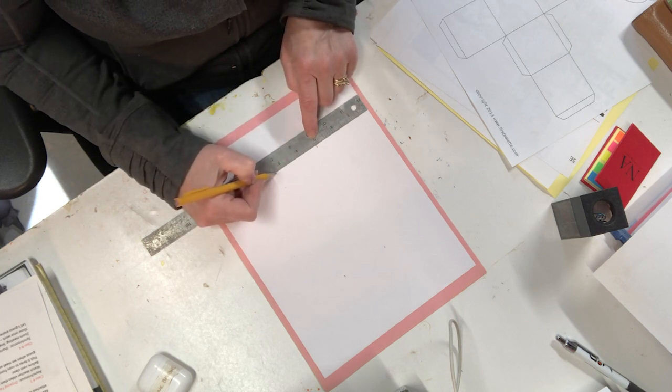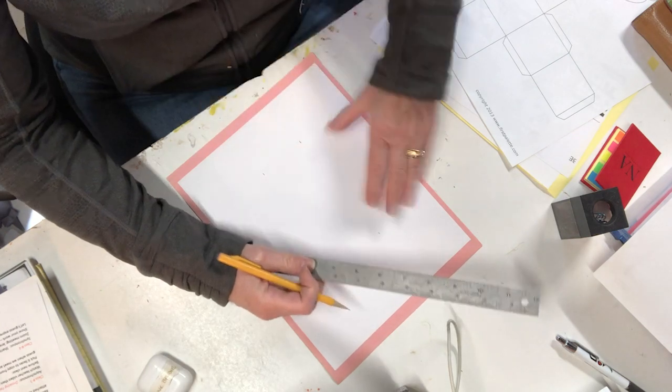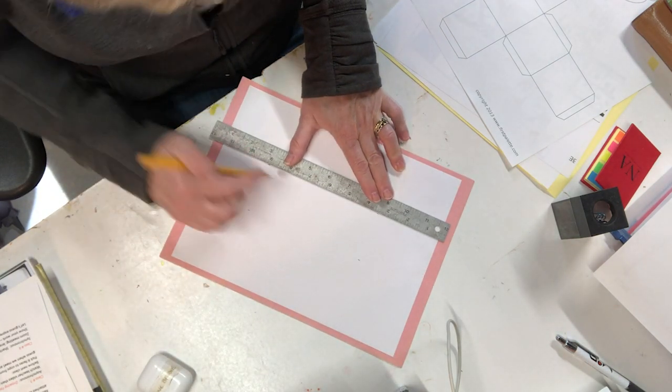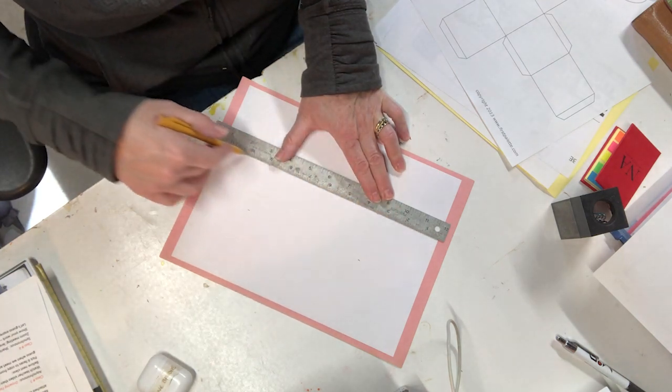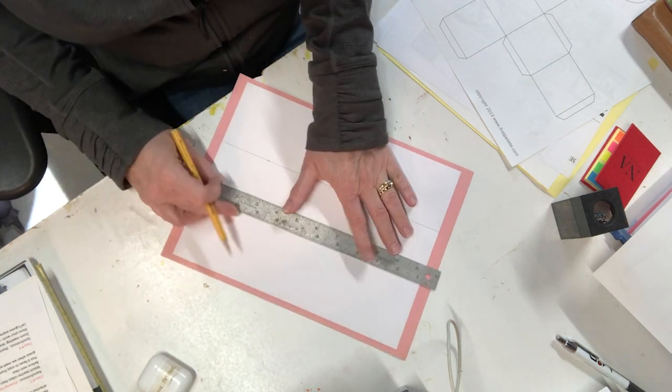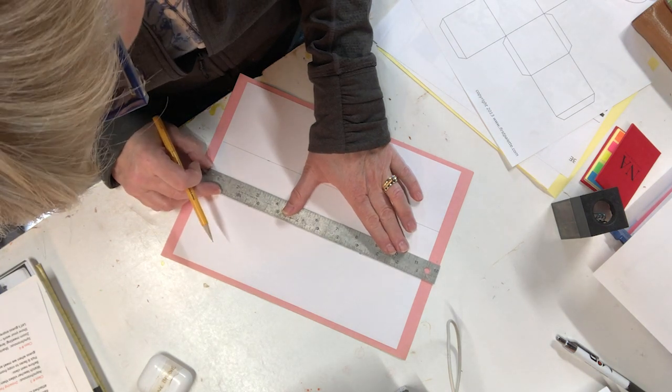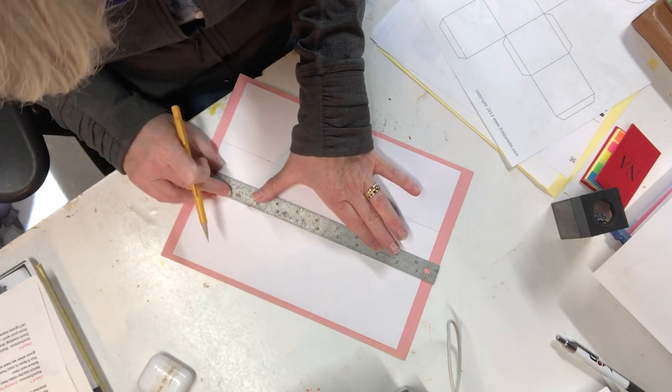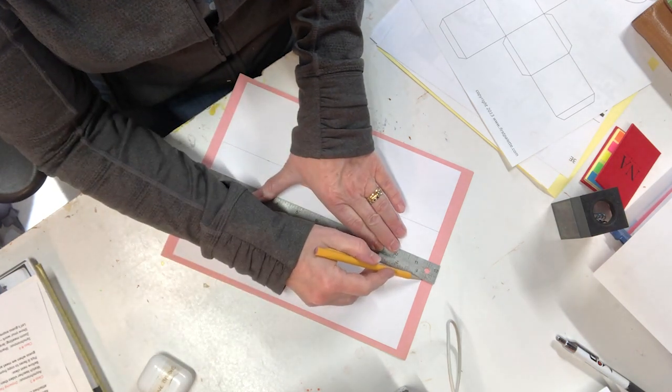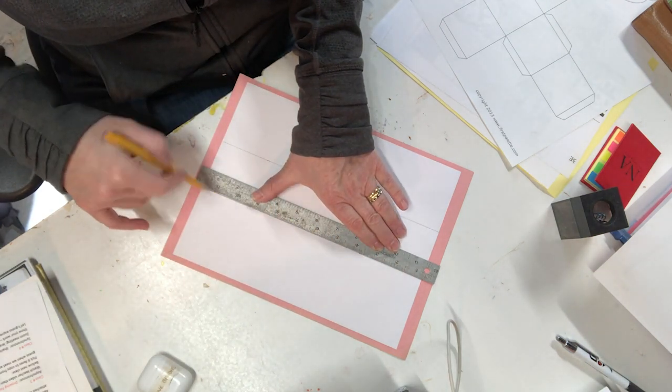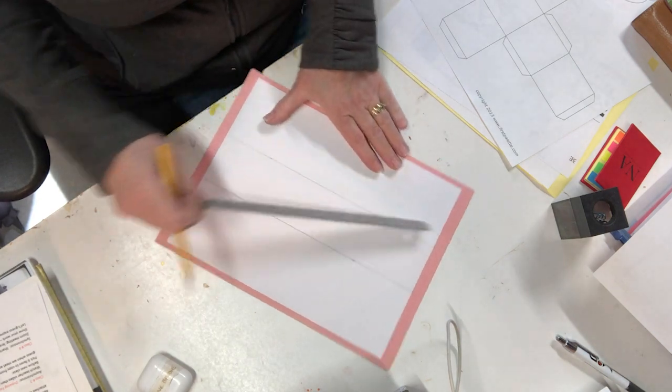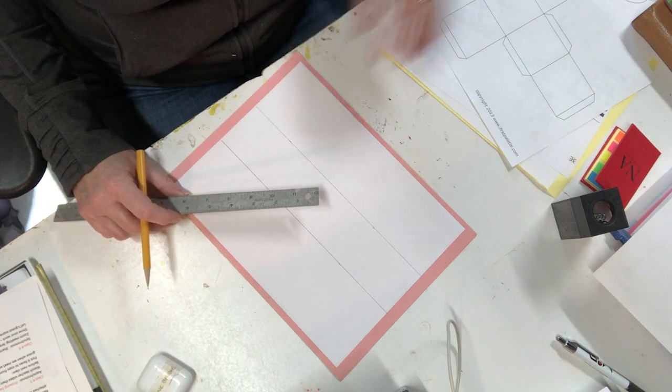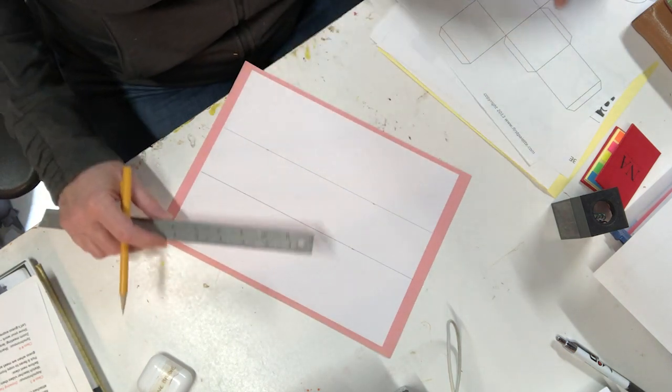Now if I connect these together with a line, I'm well on my way. Line it up carefully before you mark it. Notice I'm widening my finger and thumb to support the ruler so it doesn't shift. If you hold it up here the pencil could force it to shift.